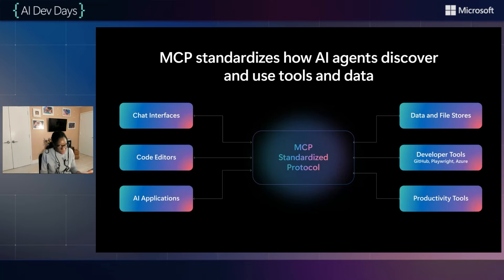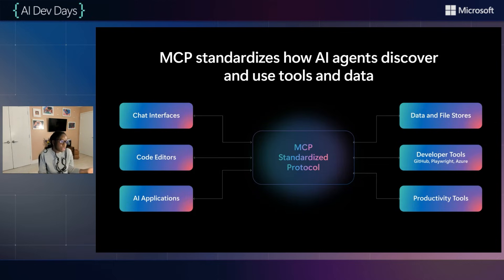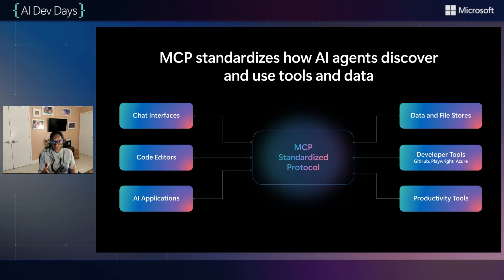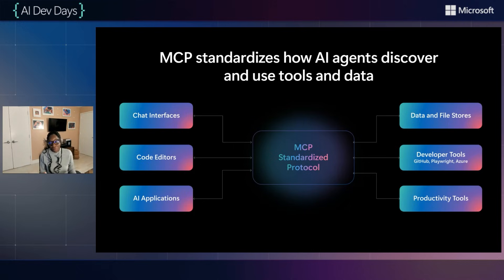MCP clients are the interface through which you interact with an agent. It could be a chat interface like Claude, it could be a code editor like VS Code, or it could be your AI application leveraging tools to create an automated task. Using the MCP standard protocol, it then accesses a set of MCP servers. MCP servers can do things like access data and file stores, developer tools like the GitHub MCP server, the Playwright MCP server, the Azure MCP server, productivity tools like Notion, and design tools like Figma — all in a standard way that enables a more robust and complete experience.